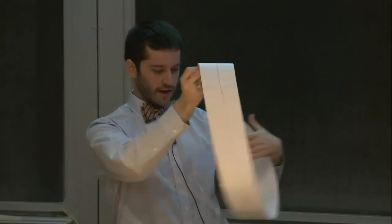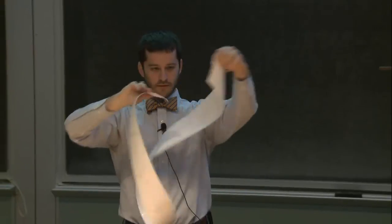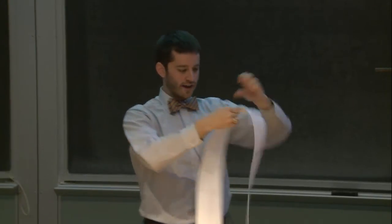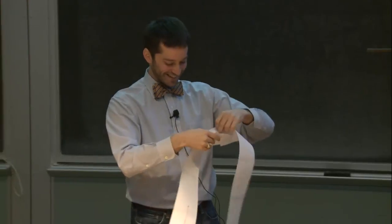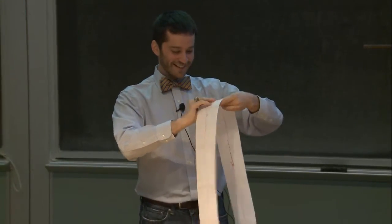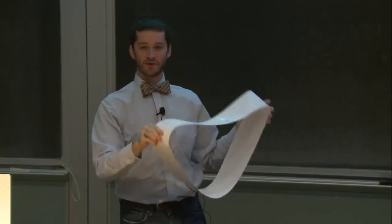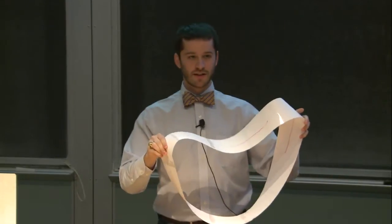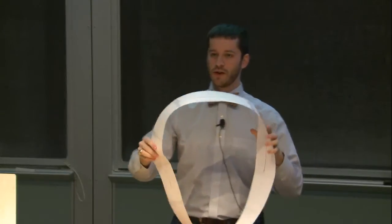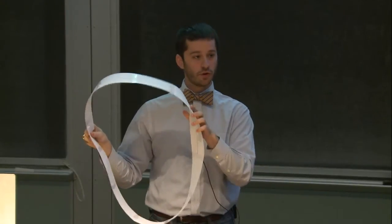The only way I can turn this Möbius strip object into a loop is by tearing it, taking the twist out, and reattaching it. Now it's no longer a Möbius strip but a normal loop. Even though you could say they look like they have the same number of holes, it's really a study of whether I can morph one object into the other without breaking it. And you can see the only way to turn a Möbius strip into a loop is by breaking it.